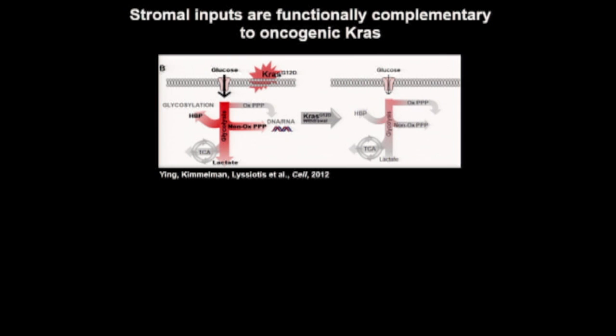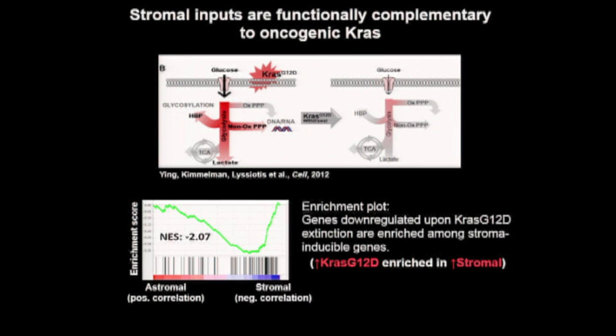In light of the observed similarities between the genes found in that study and mine, I did gene set enrichment analysis comparing my RNA-seq data to the microarray data from that paper. I found that genes downregulated upon oncogenic KRAS extinction are significantly enriched among stroma-inducible genes. Put another way, genes positively regulated by oncogenic KRAS are enriched among those induced by stromal cues — and remember, this is in the context of oncogenic KRAS in these cell lines.